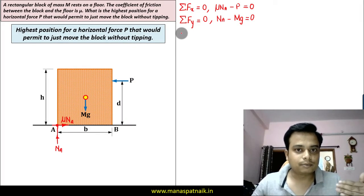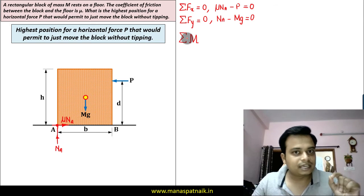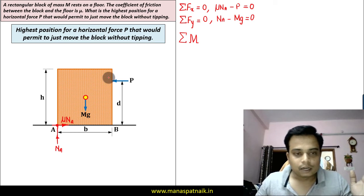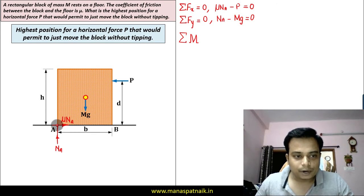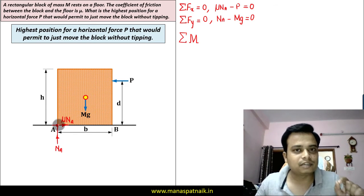So we have to take the moment about a specific point. Well what is that point? Infinite number of points are there but you have to be very clever while choosing the point. Now if you watch carefully, if you take the moment about point A what will happen? You have to work with one, two, three, and four forces. And if you watch carefully these two forces N_A and μN_A, both of them are passing through point A itself, therefore their moments are going to be zero. So you are left with this force mg and this force P.